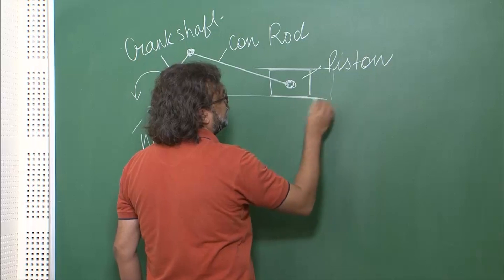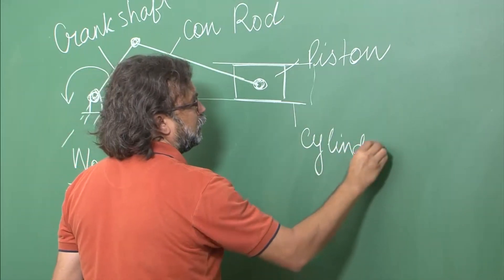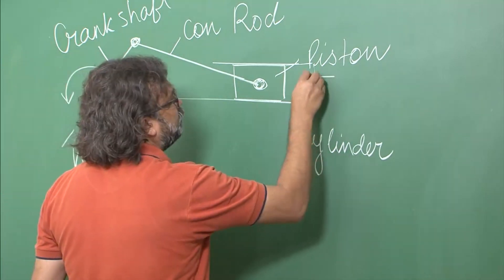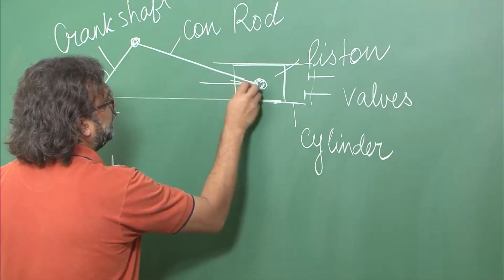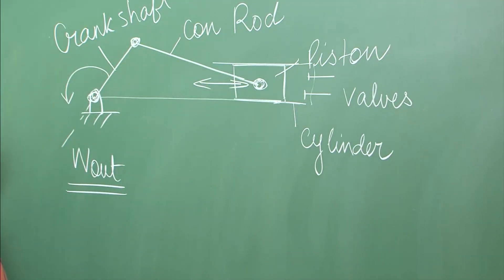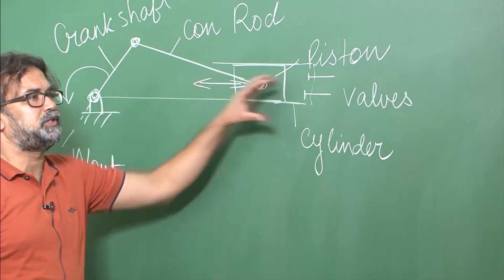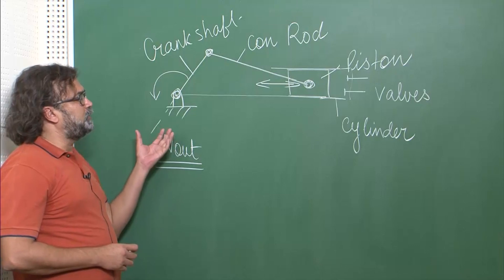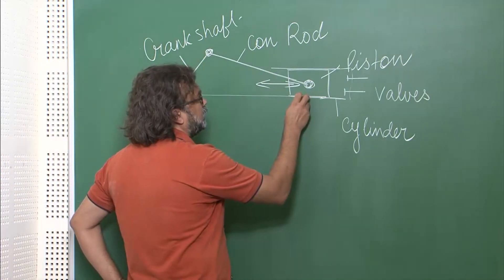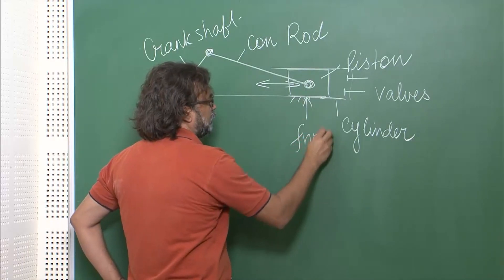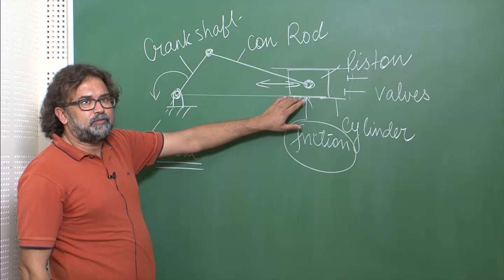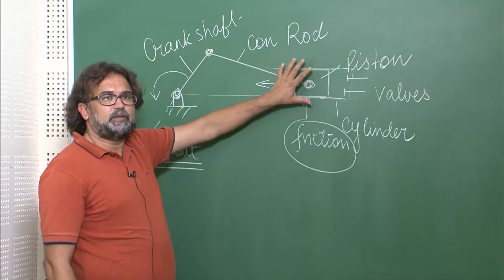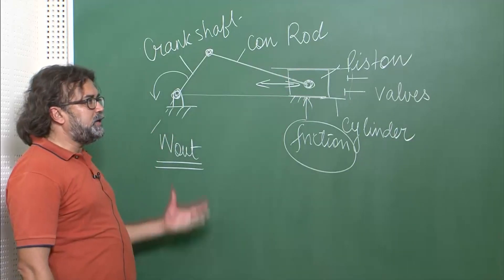There was the cylinder here, this was the cylinder in which the piston was going up and down, there was some valve mechanisms here, and the piston was reciprocating. Now the question is: can we have an engine which does not work on a reciprocating motion being converted to rotary motion? Because the friction at these points is reasonably large.